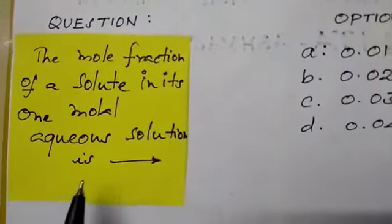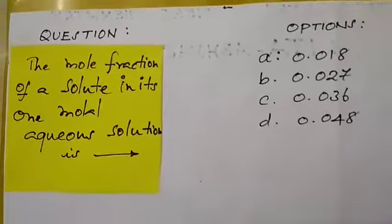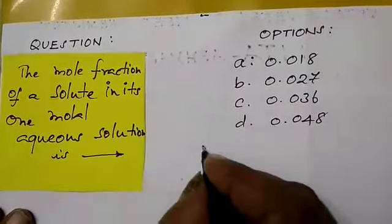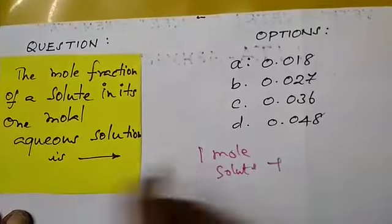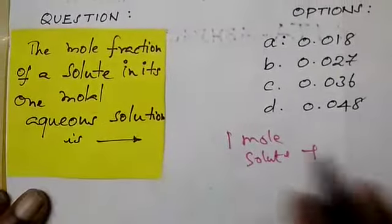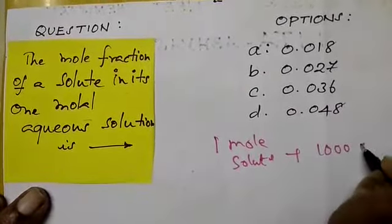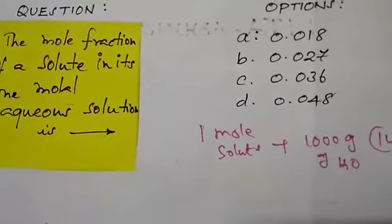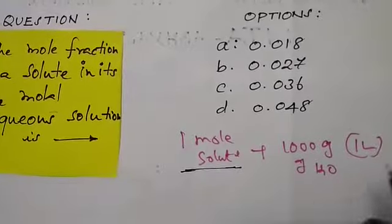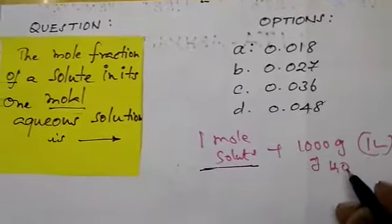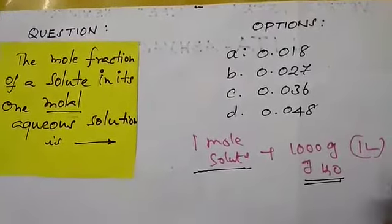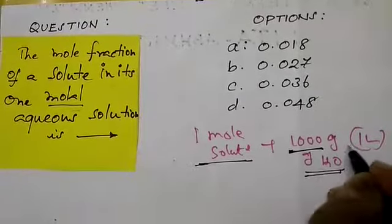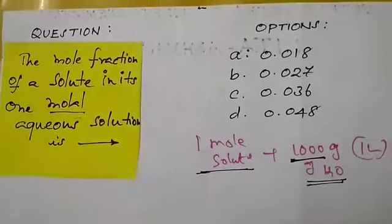This question about mole fraction of a solid in a one-molal solution is very very important — it has already come two times in exams. One mole of a solid dissolved in a one-molal aqueous solution. Molal means one mole of solute per 1000 grams of solvent. So one mole of solid is dissolved in 1000 grams of water.